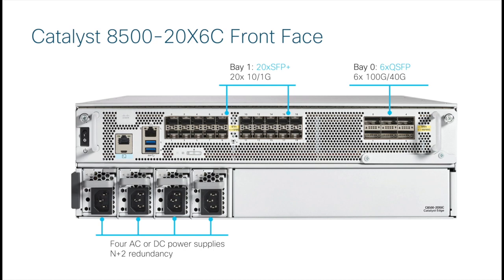You will notice that there is a blank panel in the lower right-hand corner. While this does look like there is room for expansion, the C8500 20X6C is a fixed configuration platform. This blank cover protects the router's internal hardware and helps manage airflow inside the chassis. This blank panel is not removable.